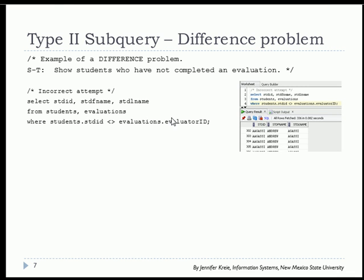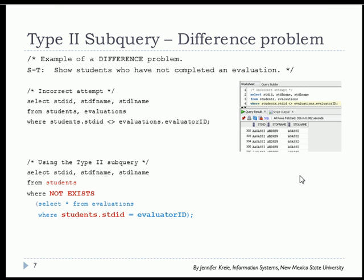If you ran this query, you would see that there is a lot of redundancy here and it's actually just incorrect. Andrew Agassi has done evaluations, but his ID doesn't match up with many of the evaluator IDs listed in the evaluations table. So we're not getting what we actually wanted to get from this.